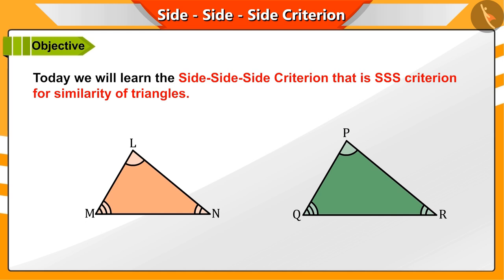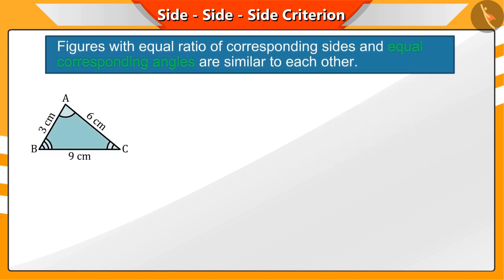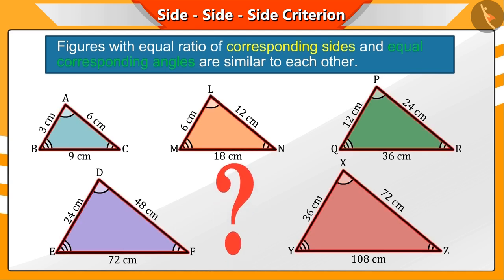As we all know, the figures with equal ratio of corresponding sides and the equal corresponding angles are similar to each other. You are given some triangles here. Are all the corresponding angles of these triangles equal? And what do you understand by the corresponding sides of these triangles?